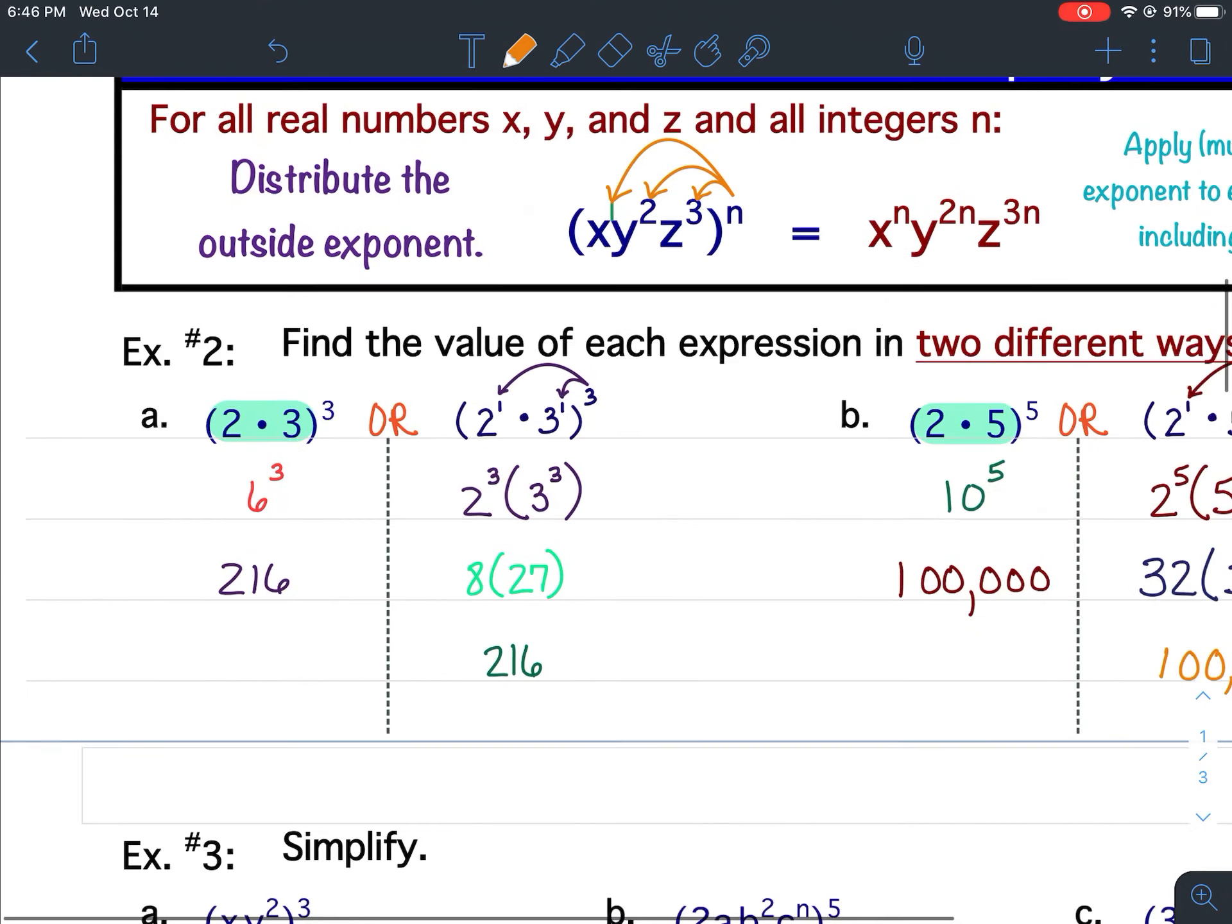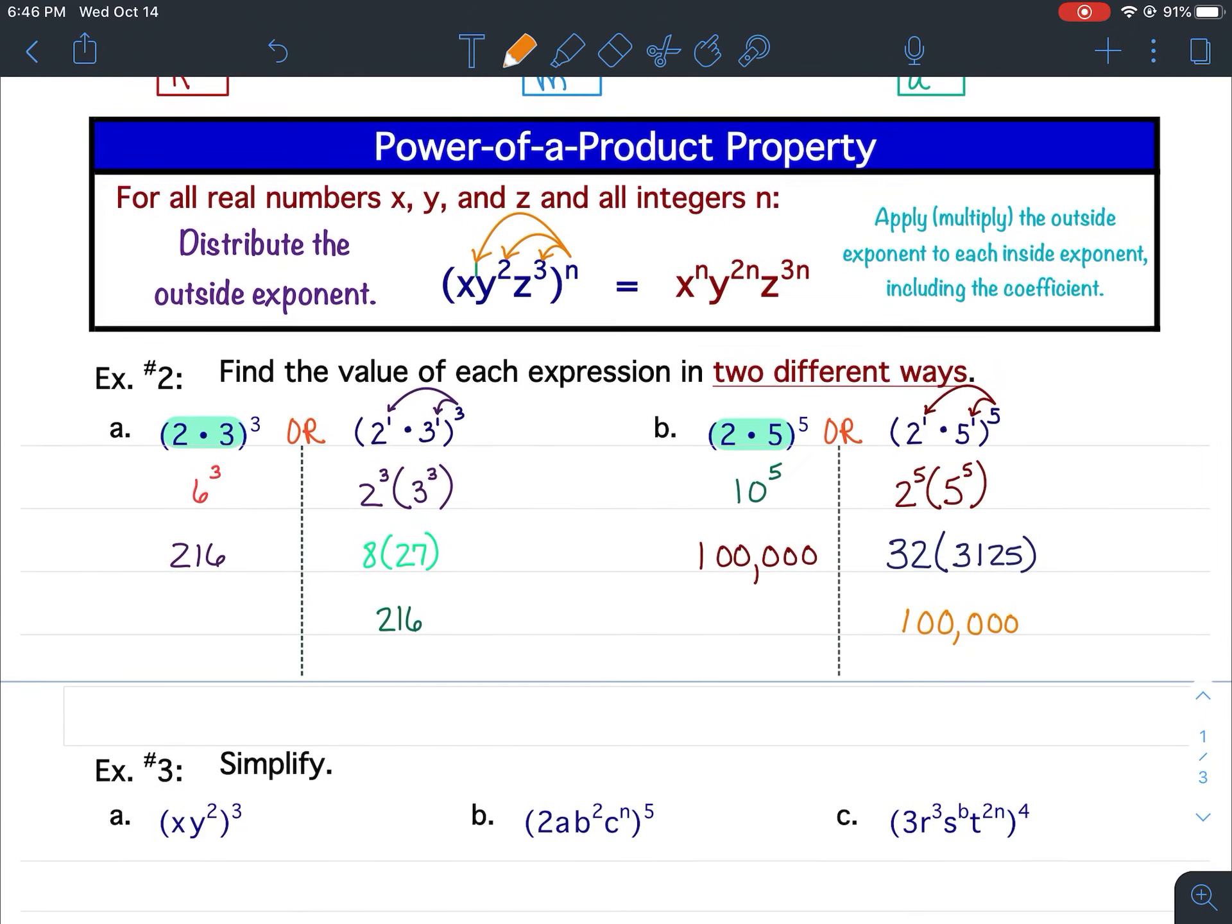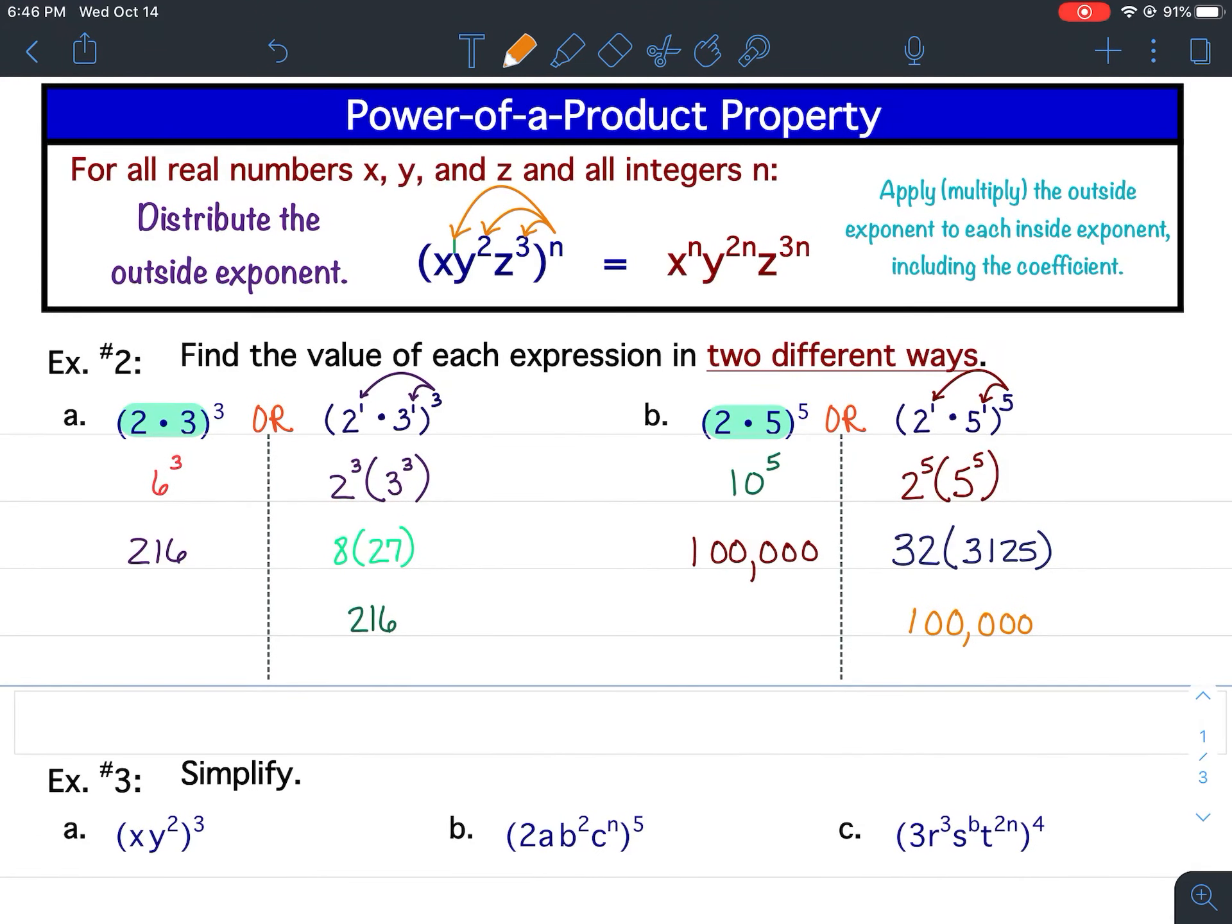So one more time, the only reason I was showing you this is if you can simplify what's inside the parentheses, do that first. If you can simplify what's in the parentheses, always do that first. But if you can't, you can use the power of product property to simplify it by multiplying or distributing the outside exponent times each of the inside exponents. If you don't have anything written down or if you need more time to write down what was in the box, you can always pause your video at any time to get everything written down. If you have any questions, please let me know.